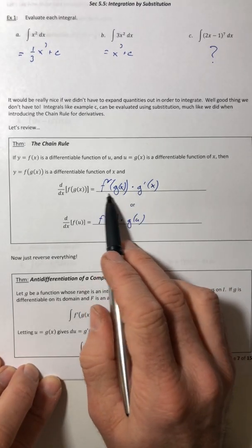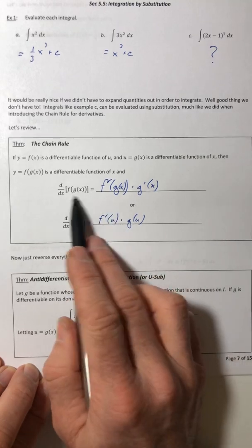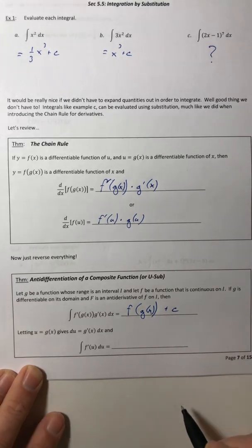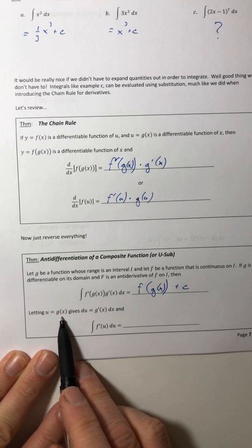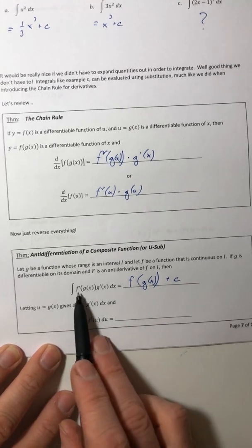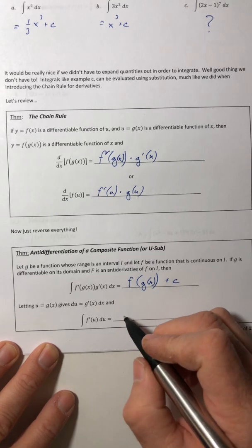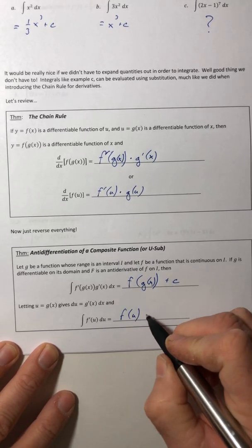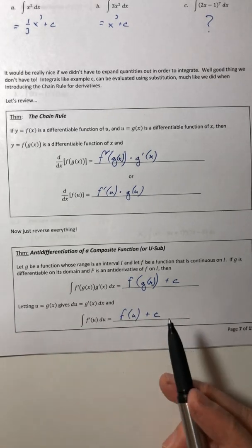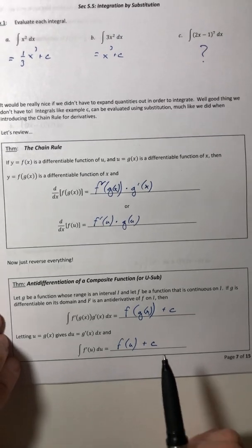Then if we integrated f prime of g of x times g prime of x, what do you think we're going to get? We're basically integrating this, so we're going backwards. If we integrated this, we should get what the original function was. f of g of x, and then that plus c. So letting u equal g of x gives du equals g prime of x dx. So if we did f prime of u du, if we integrate that, that would just be f of u plus c.